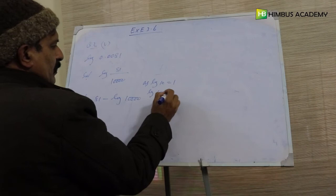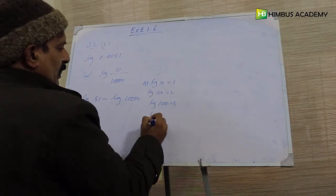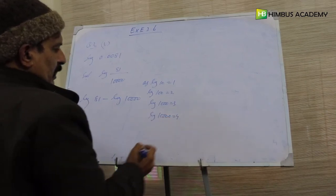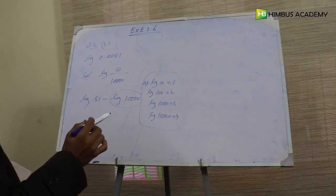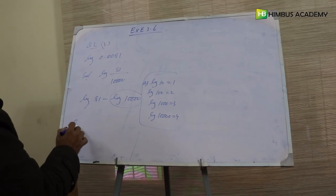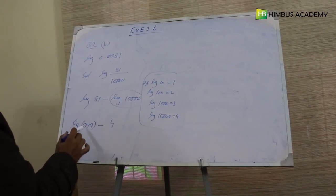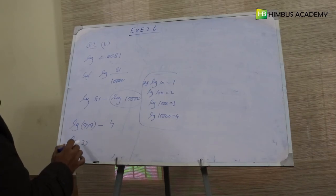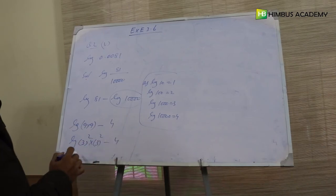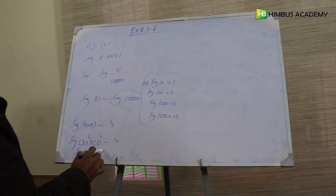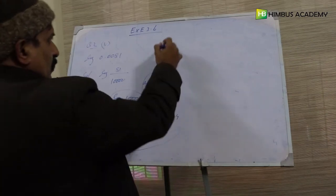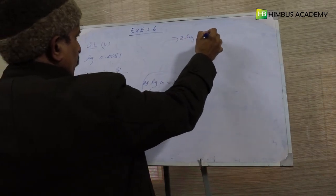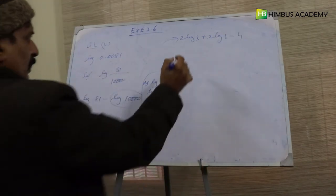Log of 10000 equals 4. اب log of 81: 81 = 9 × 9، اور 9 = 3 square۔ So log of 81 = log of 3 square plus log of 3 square minus 4. Applying log of m power n formula: 2 log of 3 plus 2 log of 3 minus 4. Log of 3 ہمارے پاس 0.4771 ہے۔